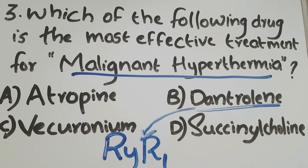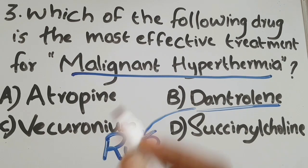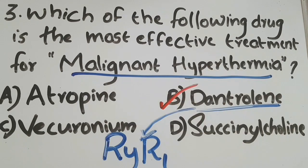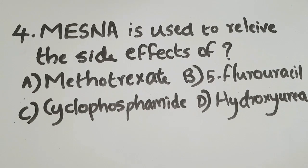By preventing calcium release, dantrolene inhibits the tension-generating interaction between actin and myosin fibers — the proteins mainly responsible for muscle contraction. Dantrolene is a peripherally acting muscle relaxant that directly acts on muscle fibers and inhibits calcium release from the sarcoplasmic reticulum. So the correct answer is option B: dantrolene.